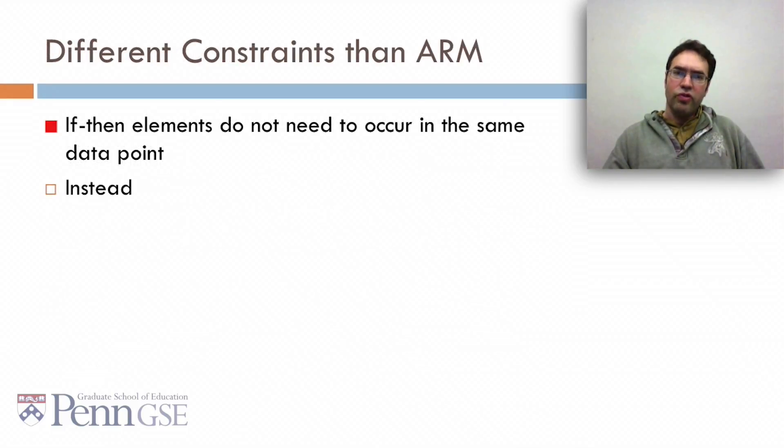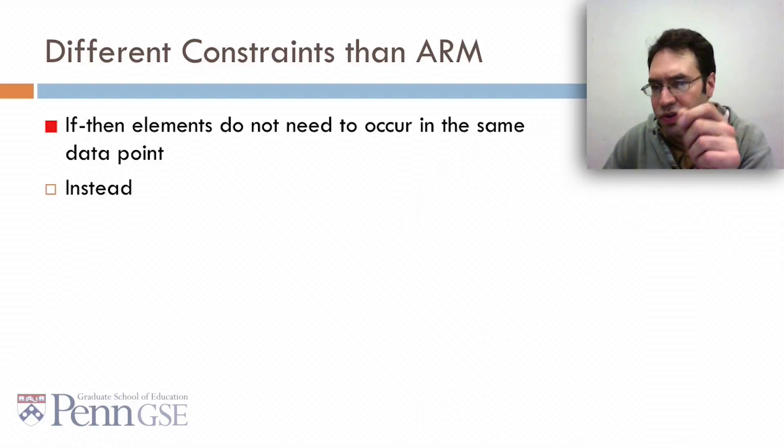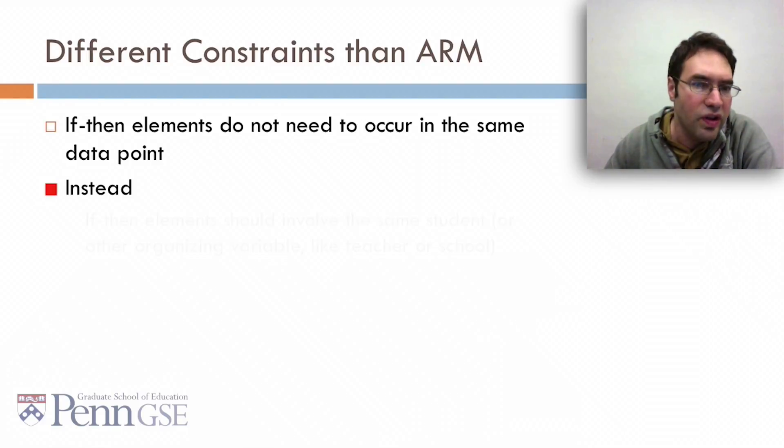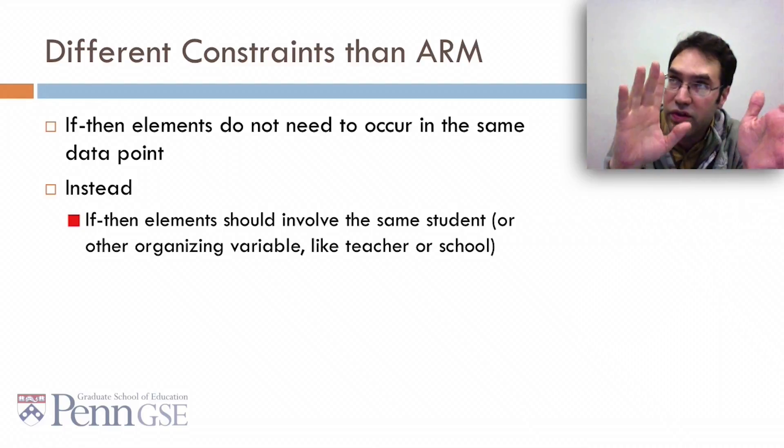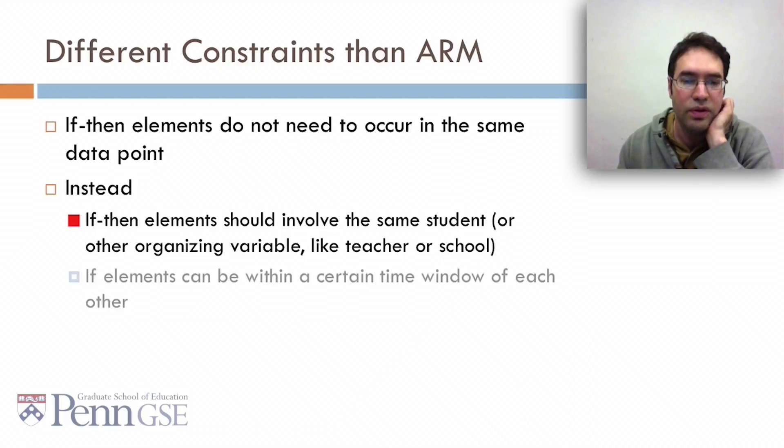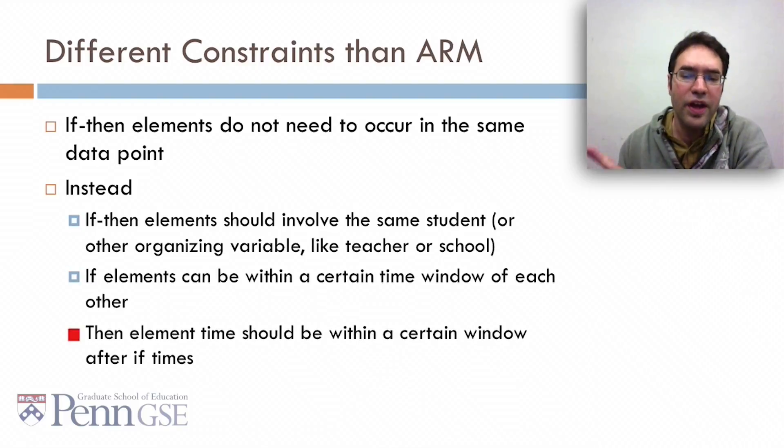There's some different constraints for sequential pattern mining than for association rule mining. If-then elements don't need to occur in the same data point. Instead, if-then elements need to involve the same student, or other organizing variable like teacher or school. And if-elements can be within a certain time window of each other. The then-element time should be within a certain window after the if-times.